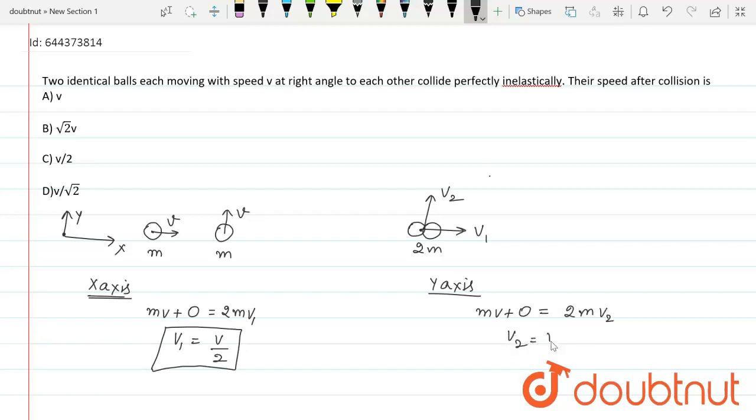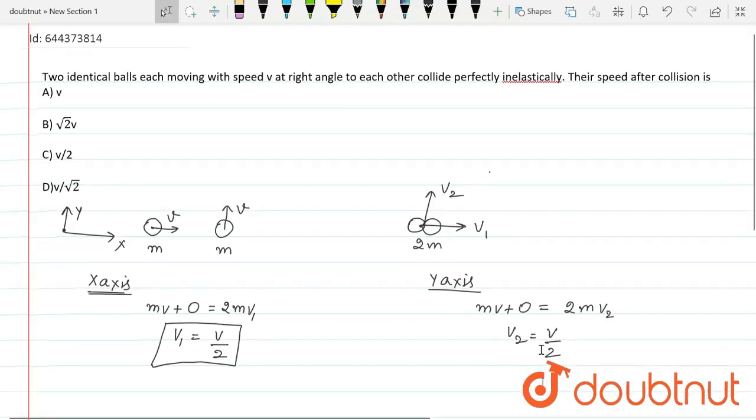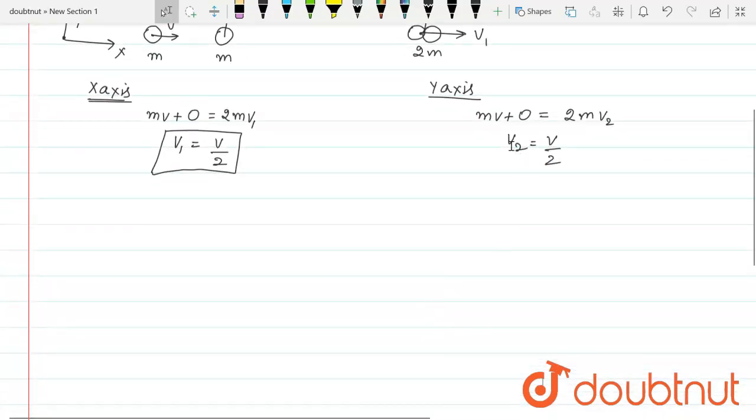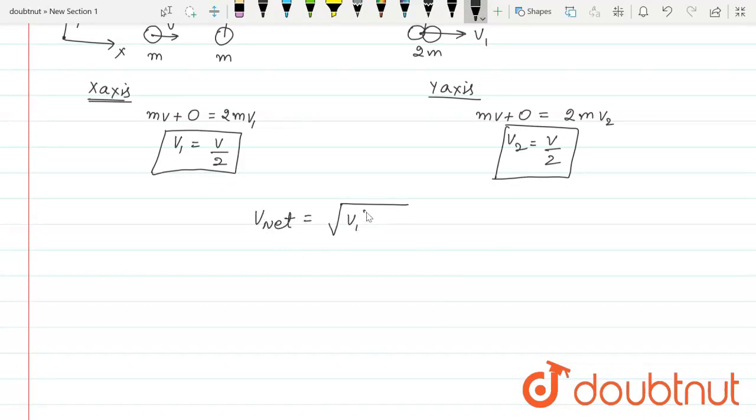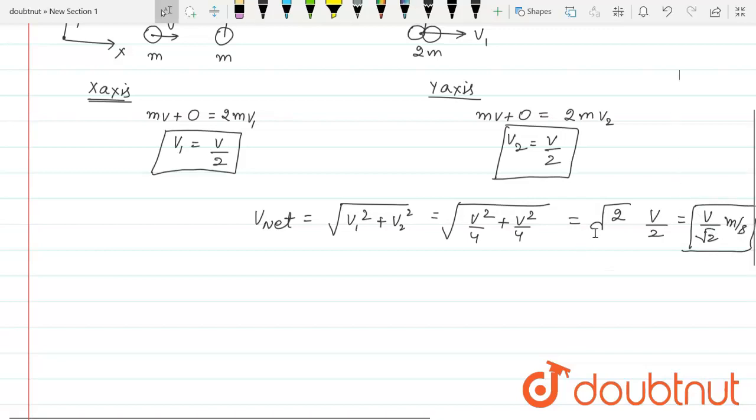The net speed of the particles of the combined system after collision turns out to be the vector sum of V1 and V2. The net speed can be written as root of V1 square plus V2 square, which is equal to root of V square by 4 plus V square by 4, which turns out to be root 2 times V by 2, which is equal to V by root 2 meter per second. According to this, the answer D is correct.